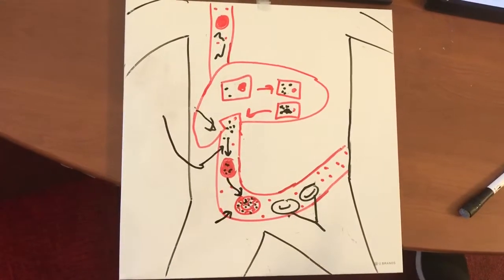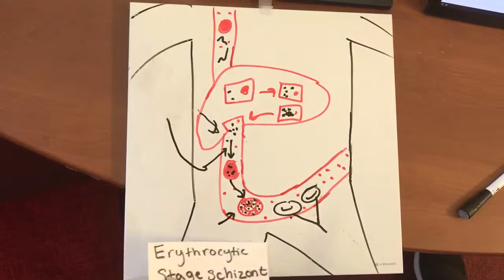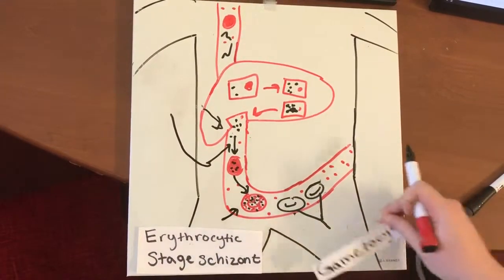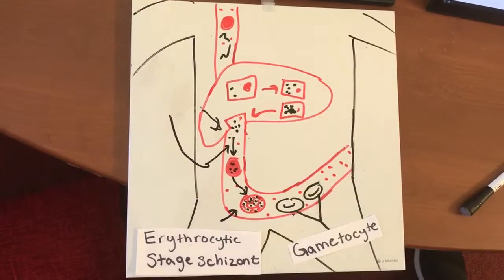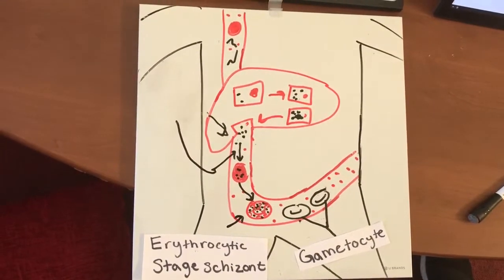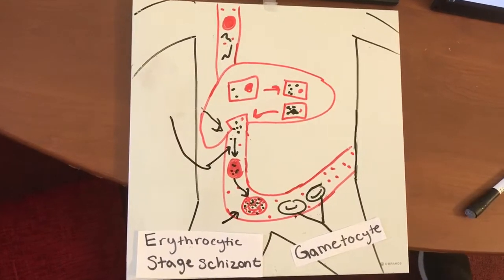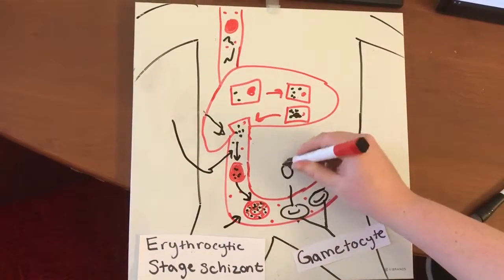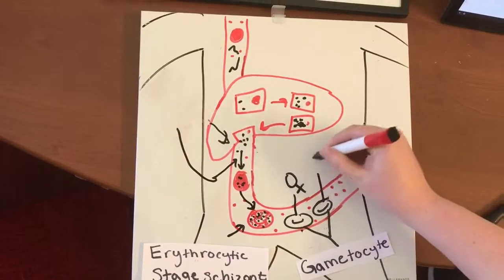In the red blood cells, the Plasmodium parasite can develop into either an erythrocytic stage schizont or a gametocyte. The erythrocytic stage determines the time between release of successive merozoites depending on the Plasmodium species, and determines the intervals of fever in malaria.